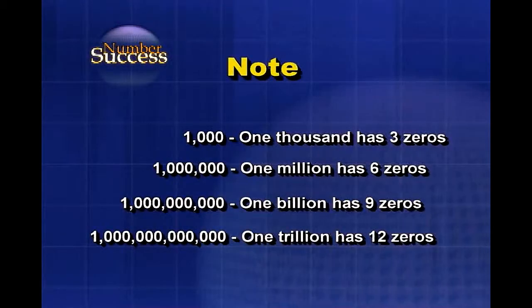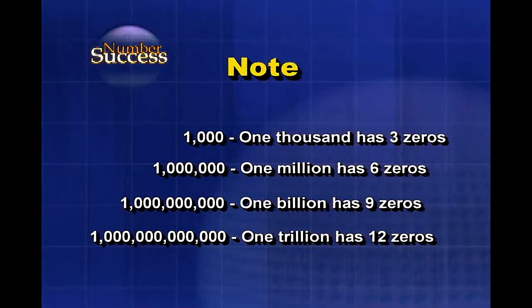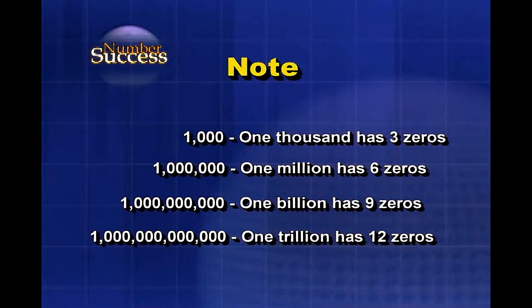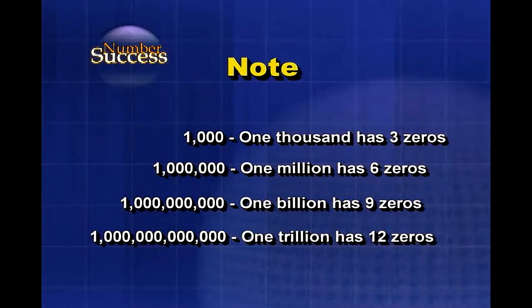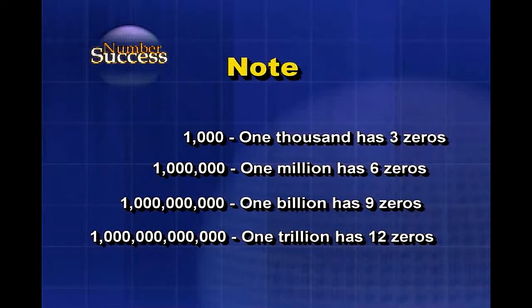Note that one thousand has three zeros, one million has six zeros, one billion has nine zeros, and one trillion has twelve zeros.